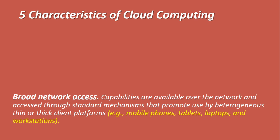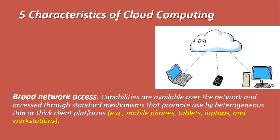The second characteristic is broad network access. It means that capabilities are available over the network and accessible through standard mechanisms that promote use by heterogeneous thick or thin client platforms — for example, mobile phones, tablets, laptops, or workstations. You should be able to access your cloud platform, whether AWS or Azure, through a laptop, mobile phone, thick client, or tablet. It should not be limited to a certain type of device.